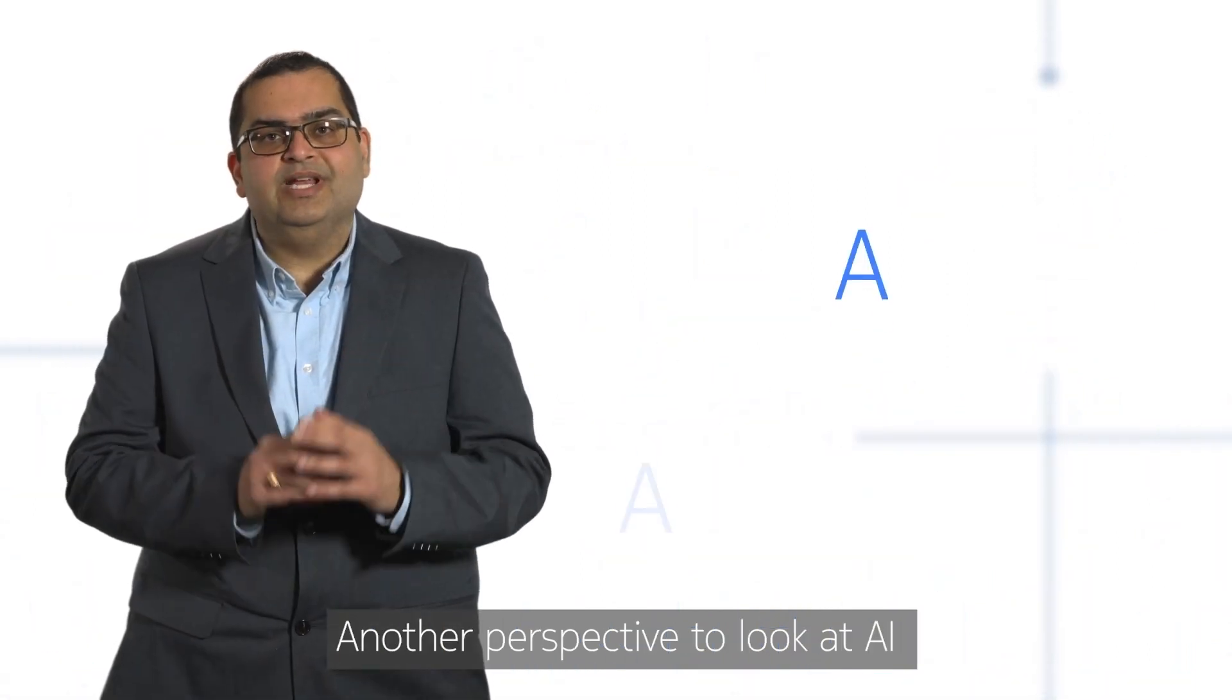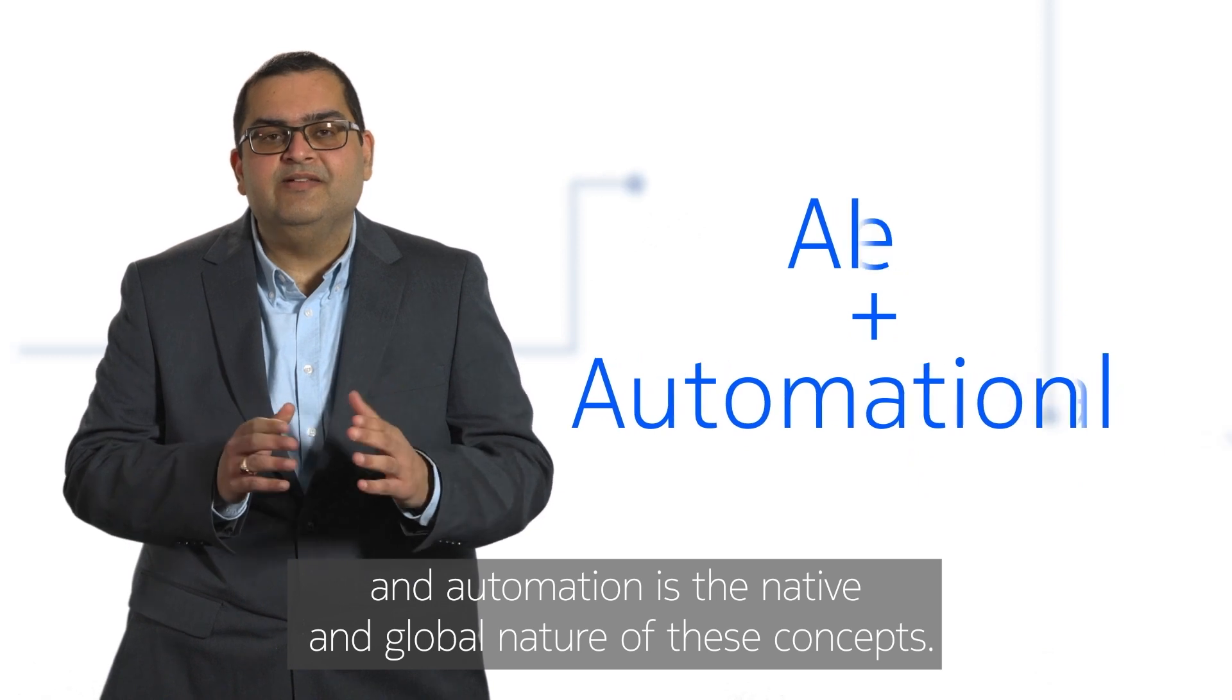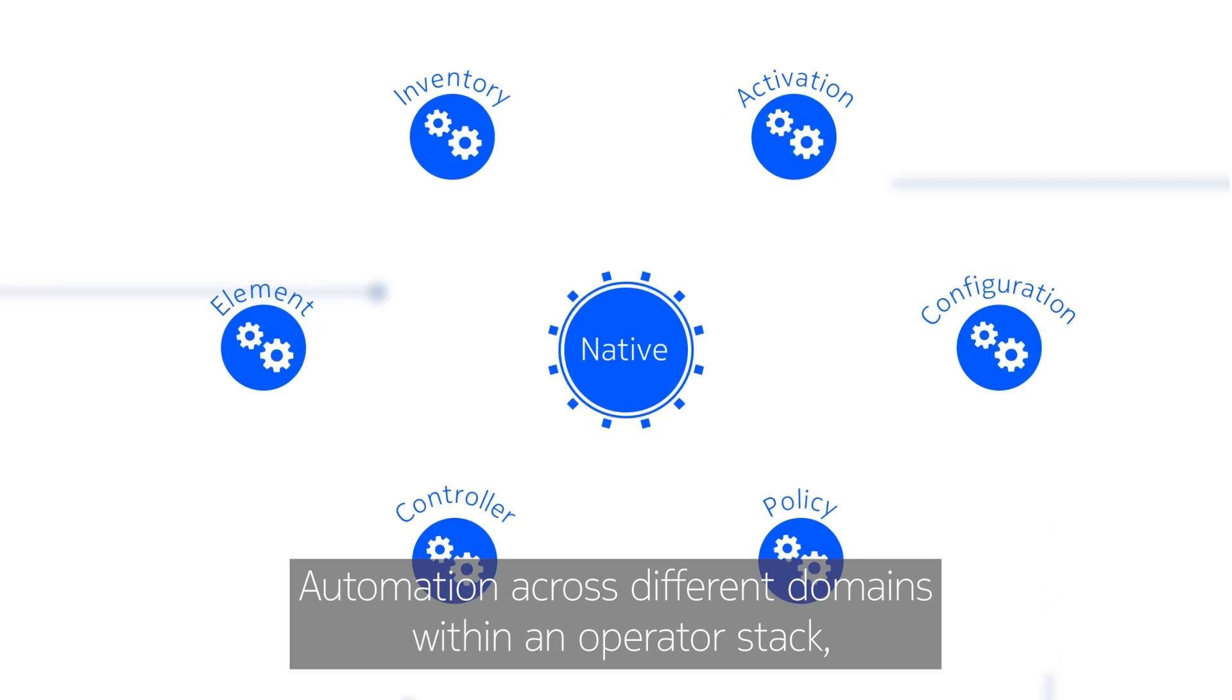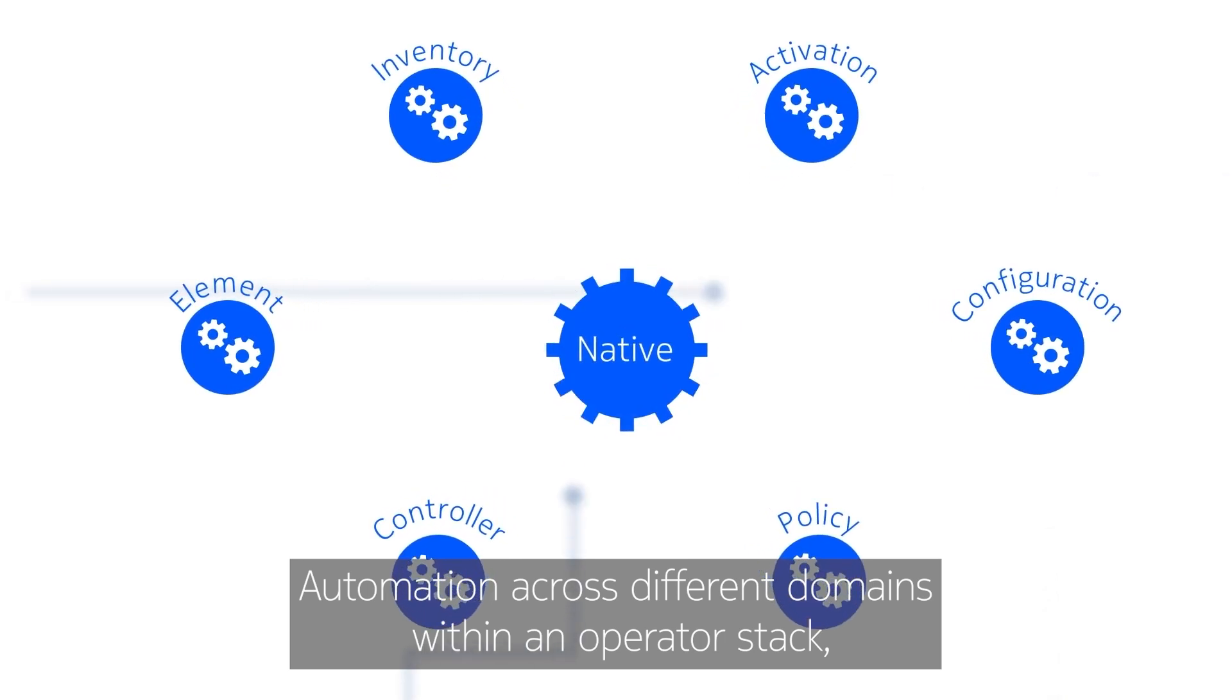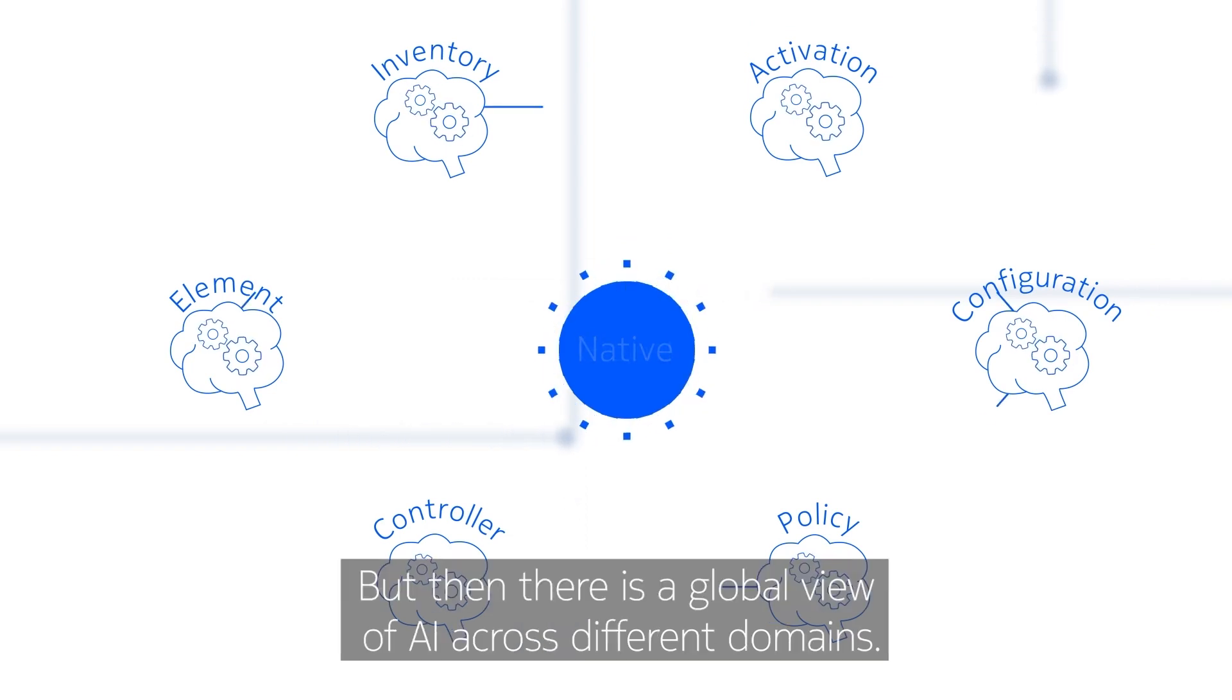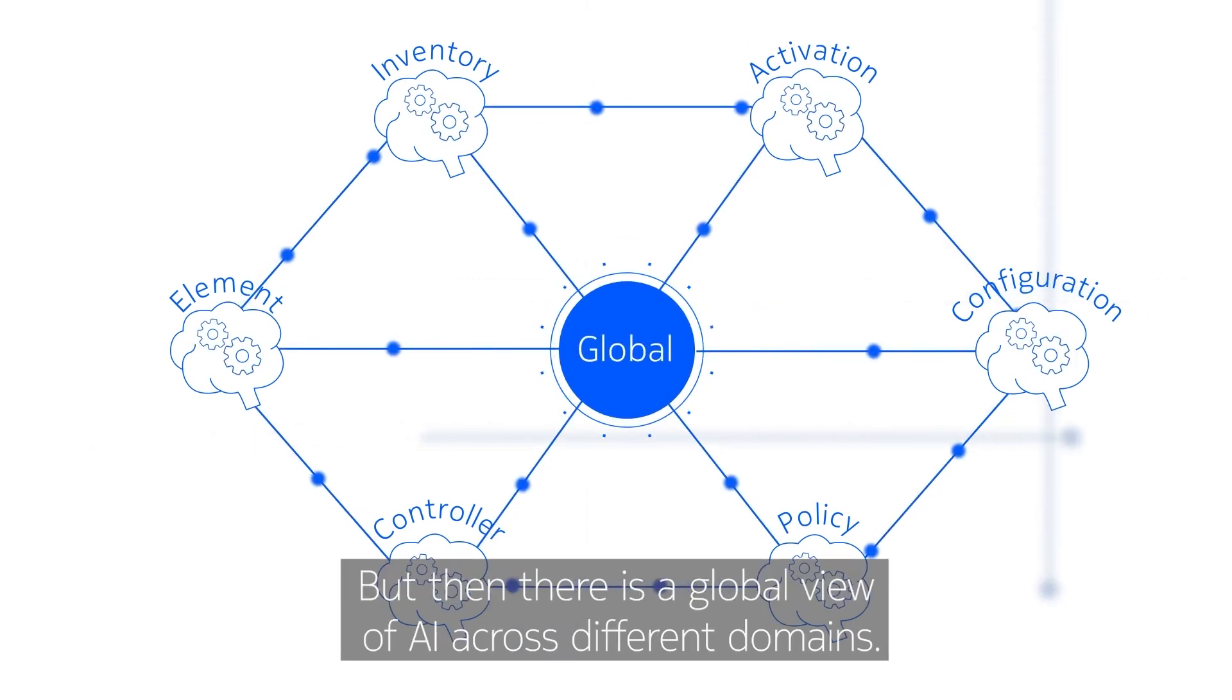Another perspective to look at AI and automation is the native and global nature of these concepts. Automation across different domains within an operator stack has already got native AI of sorts, but then there is a global view of AI across different domains.